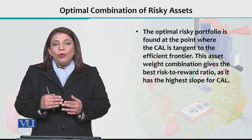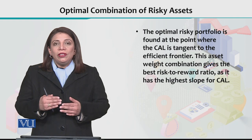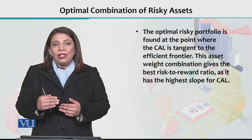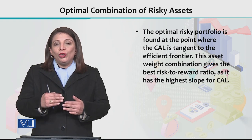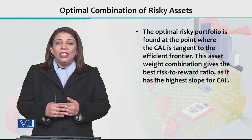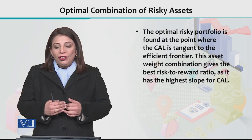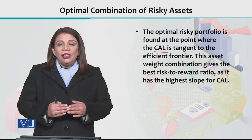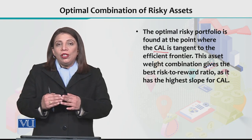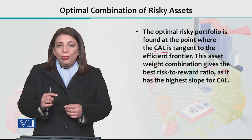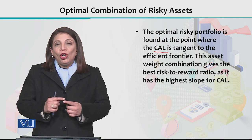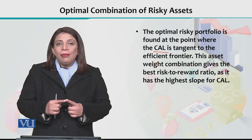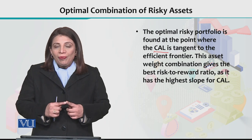The efficiency frontier is a combination of all those points — those combinations of assets which are most efficient for a given certain level of risk or volatility. Assuming a certain risk level, the best-of-the-best combinations form the efficient frontier. If we see that the capital allocation line is tangent to the efficiency frontier, that particular point gives us the optimal combination of risky assets. We are talking about risky assets here, not the risk-free asset.